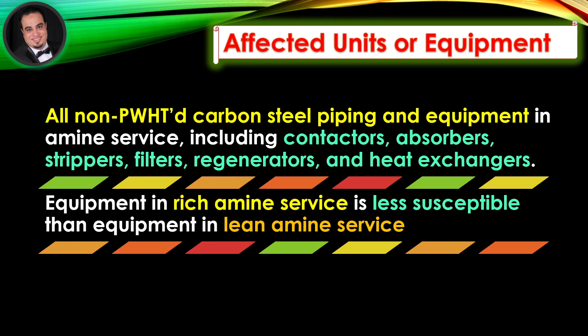Affected units or equipment: all non-post-weld heat-treated carbon steel piping and equipment in amine service. Affected units include contactors, absorbers, strippers, filters, regenerators, and heat exchangers. Equipment in rich amine service is less susceptible than equipment in lean amine service.